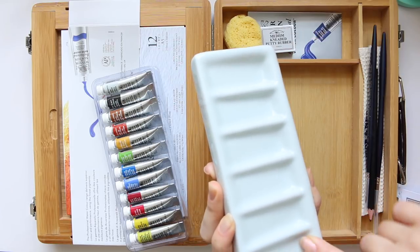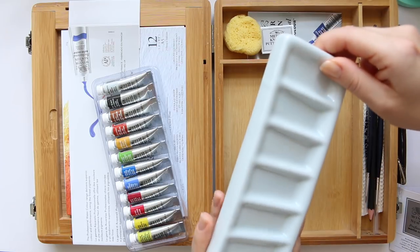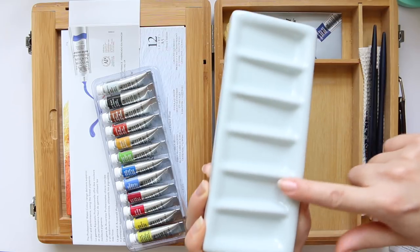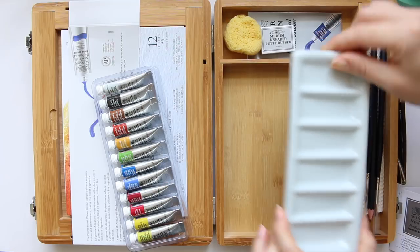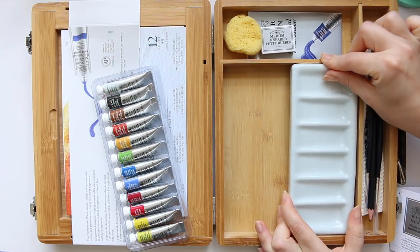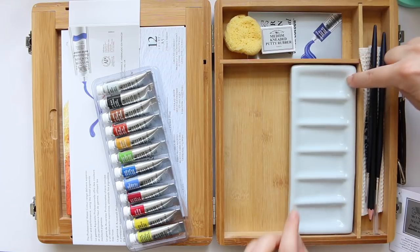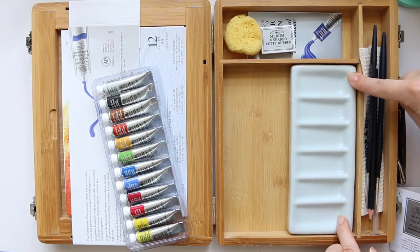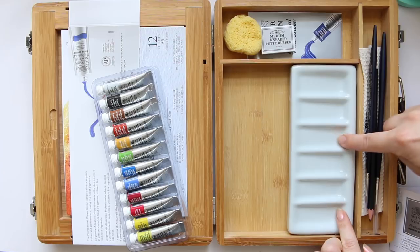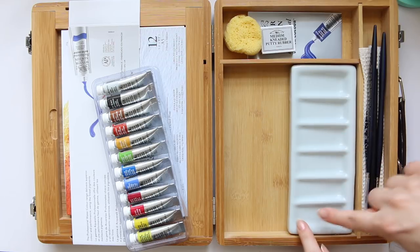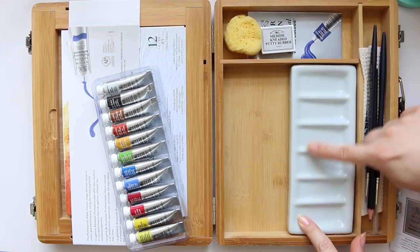So you got six sections here. It's quite obviously heavy because it's porcelain and they are tilted so they are deeper on one end and you can mix up nice puddles here and use this shallow area for mixing colors.